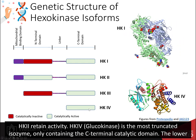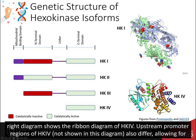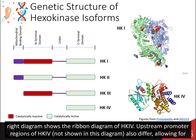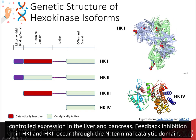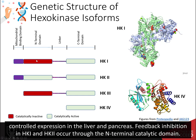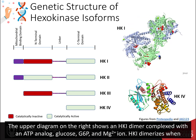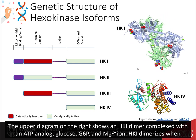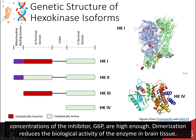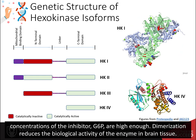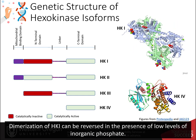Both catalytic domains in HK2 retain activity. HK4, glucokinase, is the most truncated isozyme, only containing the C-terminal catalytic domain. The lower right-hand diagram shows the ribbon diagram of HK4. Upstream promoter regions of HK4 also differ, allowing for controlled expression in the liver and pancreas. Feedback inhibition of HK1 and HK2 occurs through the N-terminal catalytic domain. The upper diagram on the right shows an HK1 dimer complexed with an ATP analog, glucose, glucose 6-phosphate, and magnesium ions. HK1 dimerizes when concentrations of the inhibitor glucose 6-phosphate are high enough, which reduces the biological activity of the enzyme in brain tissue. Dimerization of HK1 can be reversed in the presence of low levels of inorganic phosphate.